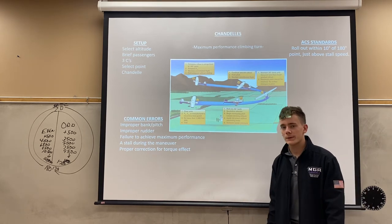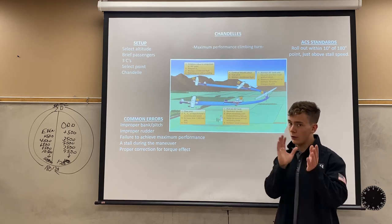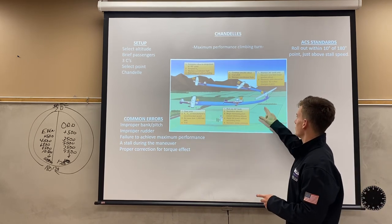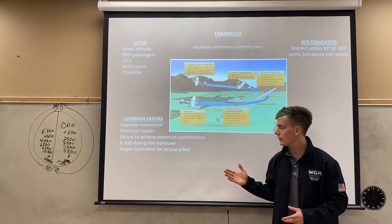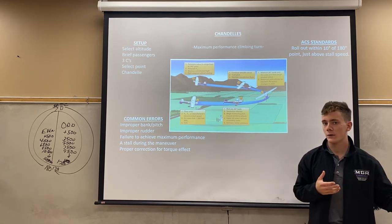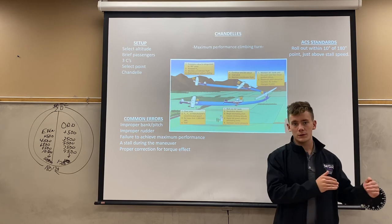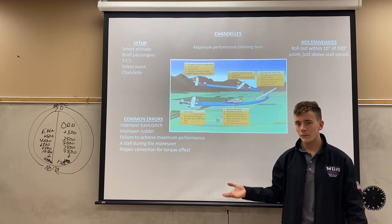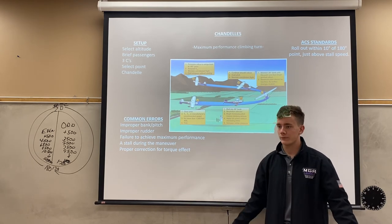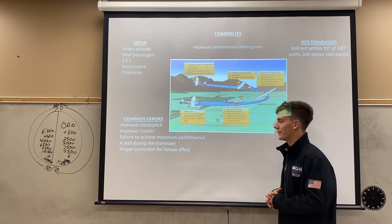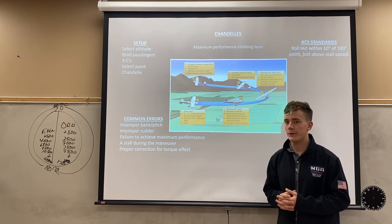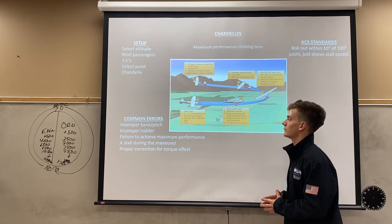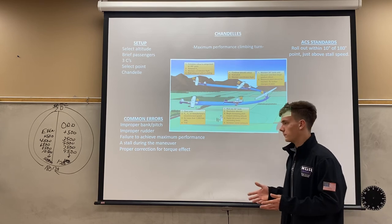Another error is failure to achieve maximum performance. In our Piper Archers with a stall speed of around 60 to 70 knots depending on bank angle, being at your 90-degree point at 90 knots would not be maximum performance. When you pitch up and climb, airspeed should be reducing — if your airspeed is 100 knots throughout the turn, you won't be climbing well at all. Also, a stall during the maneuver would fail your checkride, as it means you don't have proper authority over the aircraft.